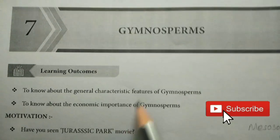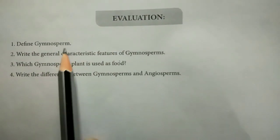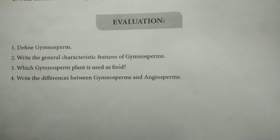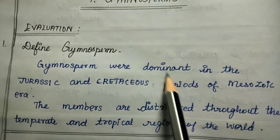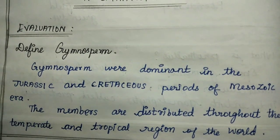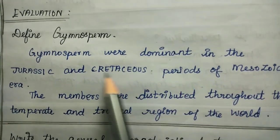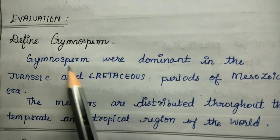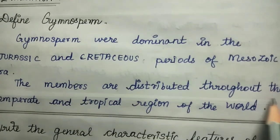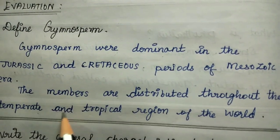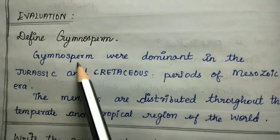Seventh lesson: Gymnosperms. Evaluation questions. First question: define gymnosperms. Gymnosperms were dominant in the Jurassic and Cretaceous period of the Mesozoic era. Members are distributed throughout the temperate and tropical regions of the world.